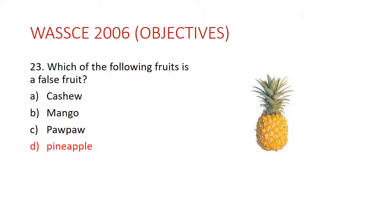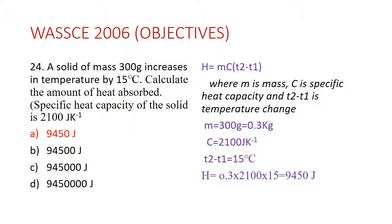A true fruit is a matured ovary of a flower. Cashew, mango, and plum come from the ovary. But pineapple is not formed from the ovary of a flower. Other examples of false fruits are apple, strawberry, and pear — all are false fruits because they are not formed from the ovary.